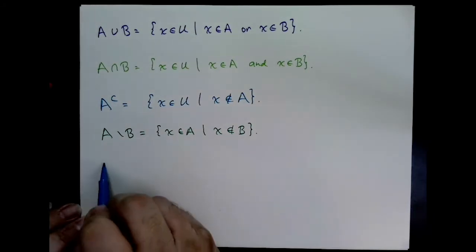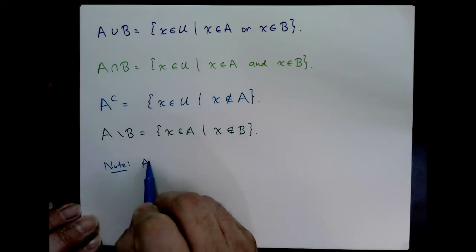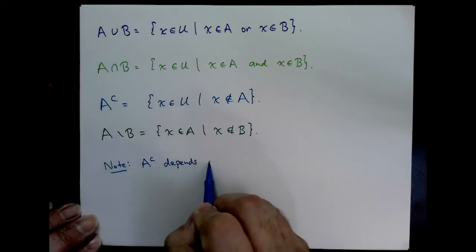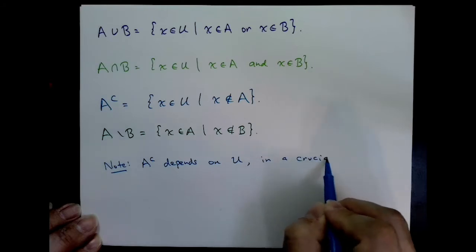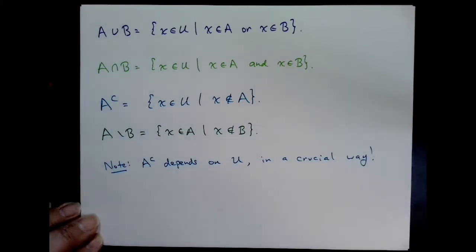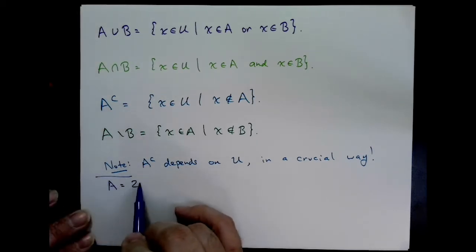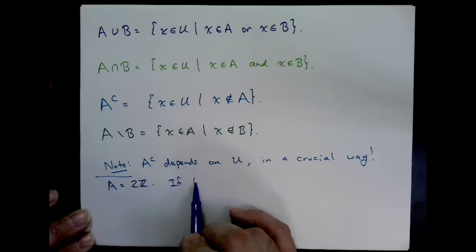Here is a super important point that's not always stressed. When we discuss the complement of a set A, we are implicitly assuming a particular universal set U that A lives in. If we change the universal set U, the complement can change. Here's an example.